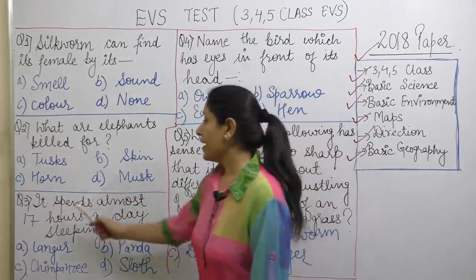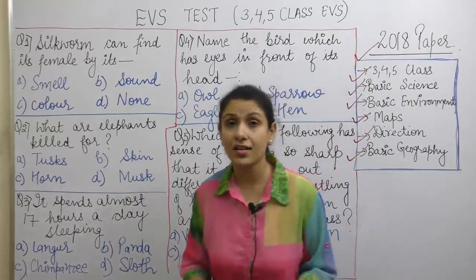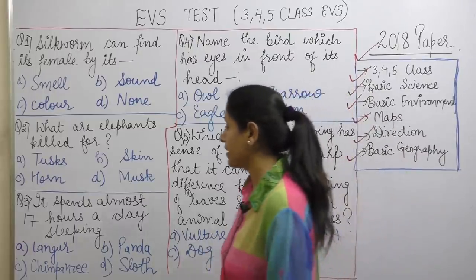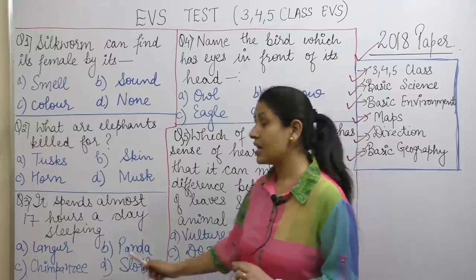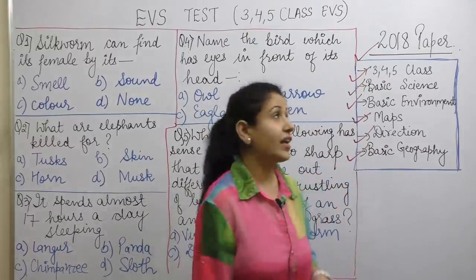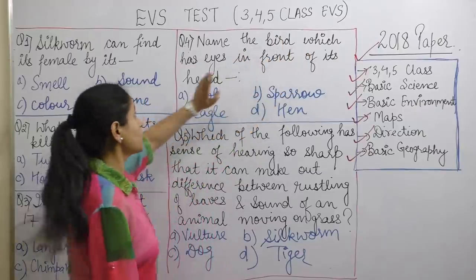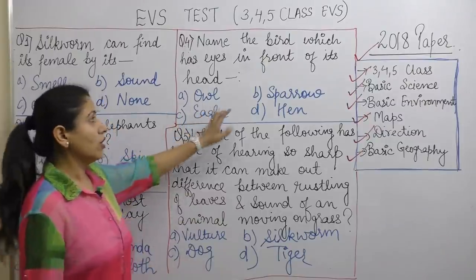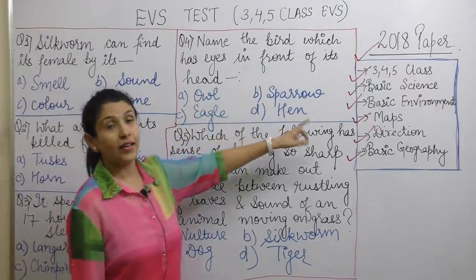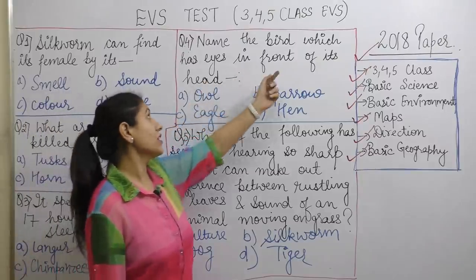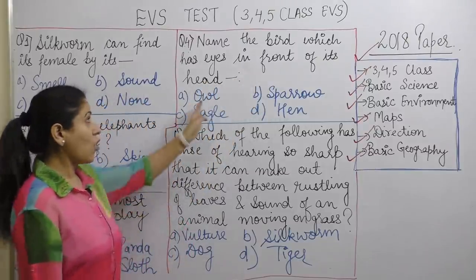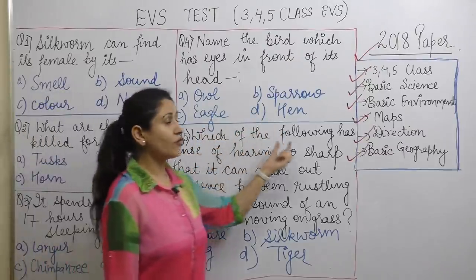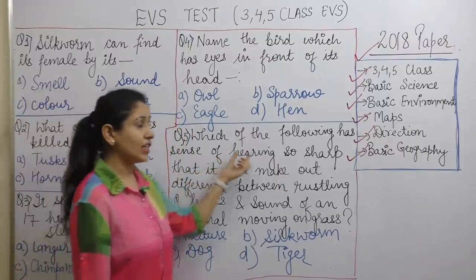Next question: It spends almost 17 hours a day sleeping — Lampoon, panda, chimpanzee, or sloth? Next question: Name the bird which has eyes in front of its head — owl, sparrow, eagle, or hen?